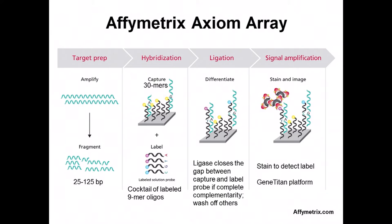Here's a different strategy: there's still a target preparation step and capture of specific genome regions at spots on the array. In this case, allelic discrimination happens by hybridization of two oligonucleotides and a ligation step that closes the gap between the capture probe and an additional probe. That ligation step is very specific — if there's a mismatch, ligation doesn't work well and that signal doesn't occur.